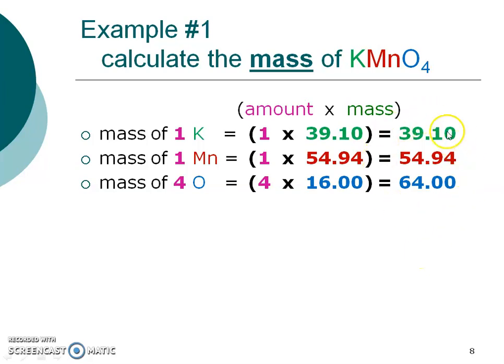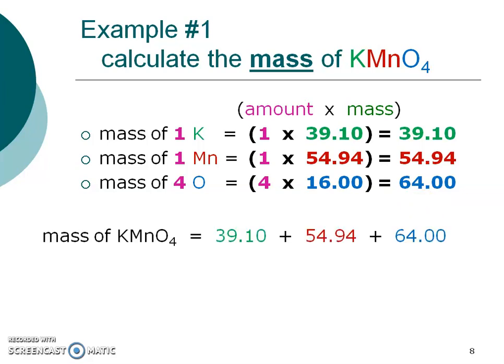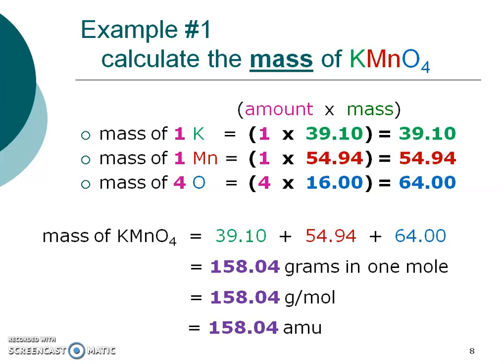Those are the masses of the individual elements in my compound. To get the mass of the entire compound, I just add up those numbers — take those three numbers and add them up. Pause and do that on your calculator. Hopefully you added them all up and got 158.04. I gave you three different ways of expressing the unit — the answer is the same: 158.04. We can say grams in one mole, grams per mole, or AMU (atomic mass unit). They all mean the same thing, but we'll use grams per mole most often because that's what helps us use it as a conversion later on.